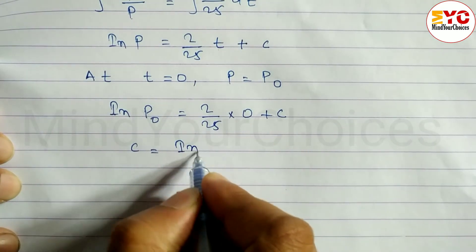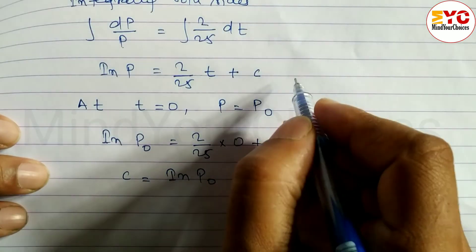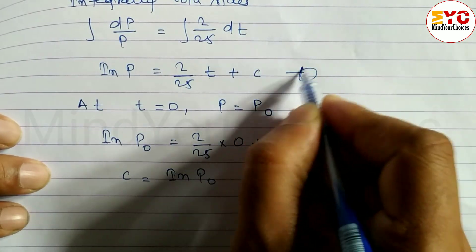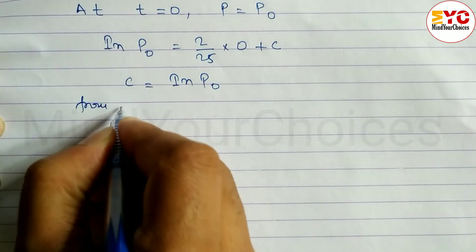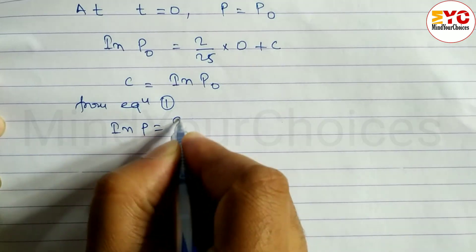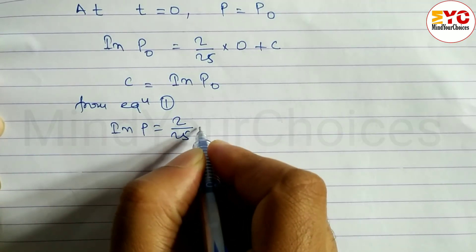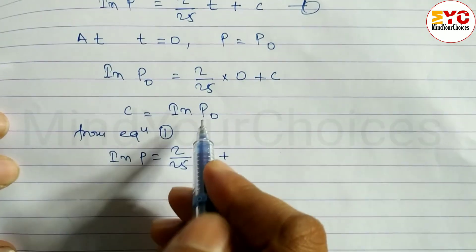Now from equation 1, we can write here: ln P is equal to 2 by 25 T plus in place of C we put ln P0.